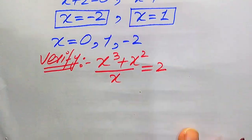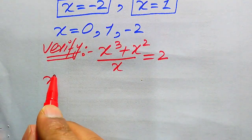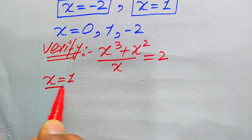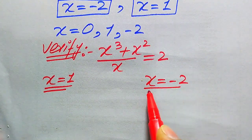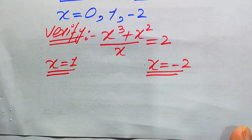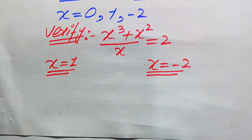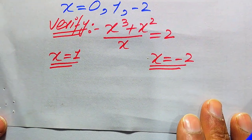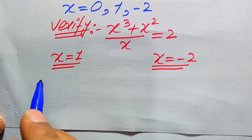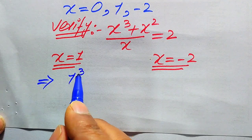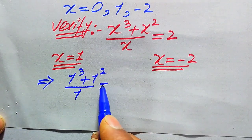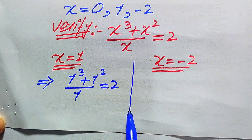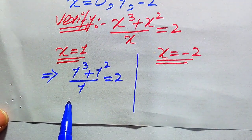We will verify x = +1 on one side and x = −2 on the other side. First we verify x = 1: substituting into the left-hand side gives 1³ + 1² divided by 1. We have 1 + 1 divided by 1 equals 2.